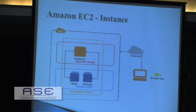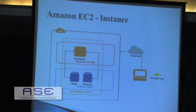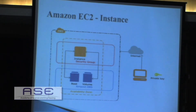This is a general view of the EC2 instance. The instance has a security group provided by the cloud service provider, and they are attached to Amazon EBS. We have the option to launch our instance in an availability zone of our choice. A private key is provided when we launch an instance so that we can communicate from a desktop to the cloud.